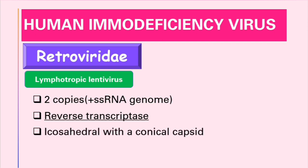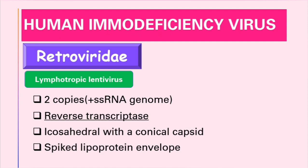This virus in its structure is icosahedral with a conical capsid, and it has a spiked lipoprotein envelope, so it's an enveloped virus. Most RNA viruses replicate in the cytoplasm of the host cell, but there are only two exceptions: orthomyxoviruses, which are the causative agents of influenza, and the second group is Retroviridae. So the HIV virus replicates in the nucleus.